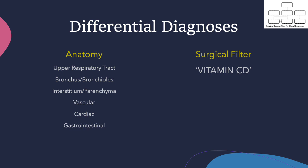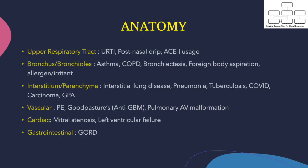We begin by formulating a list of possible differential diagnoses for cough. We can do that via anatomy or by using the surgical sieve, which employs the acronym VITAMIN CD. Using the anatomy approach, we have split the pathologies according to where they lie in the respiratory tract — pathologies that originate in the upper respiratory tract, in the bronchus, bronchioles, in the lung interstitium or parenchyma, in the vasculature of the lung, or cardiac and GI causes.